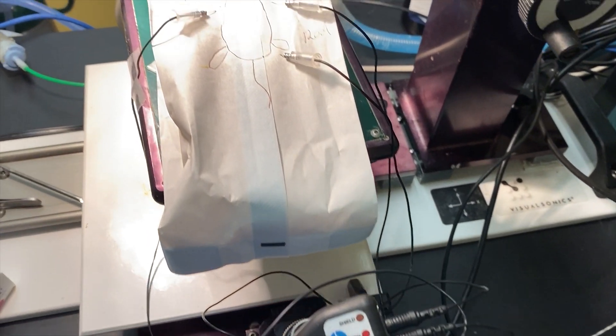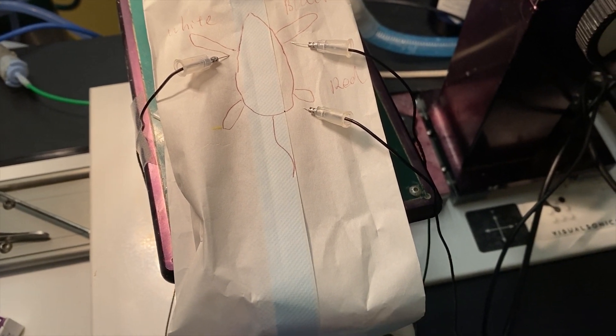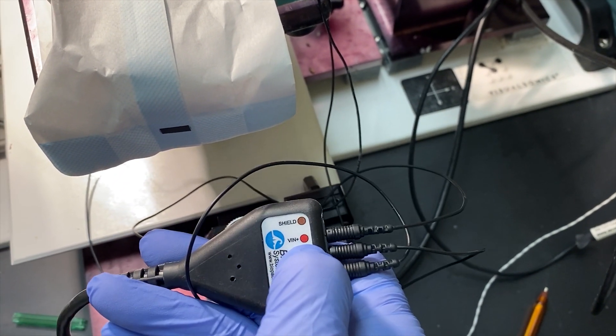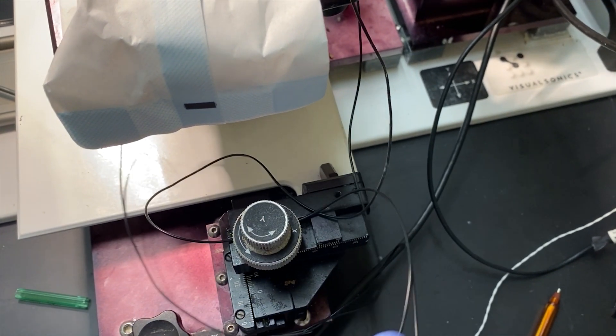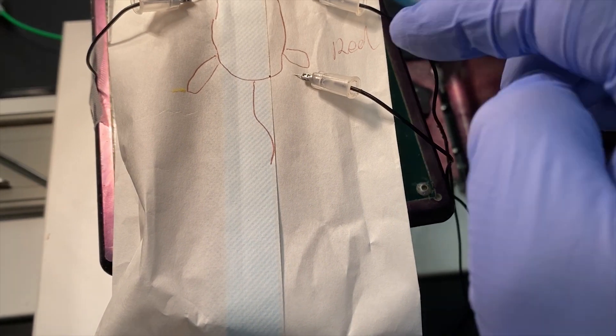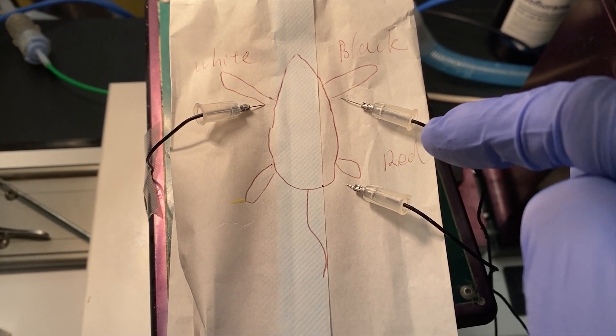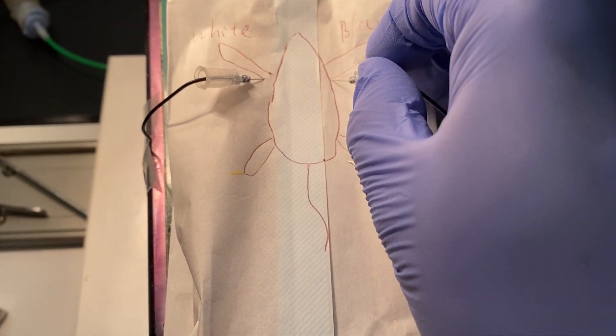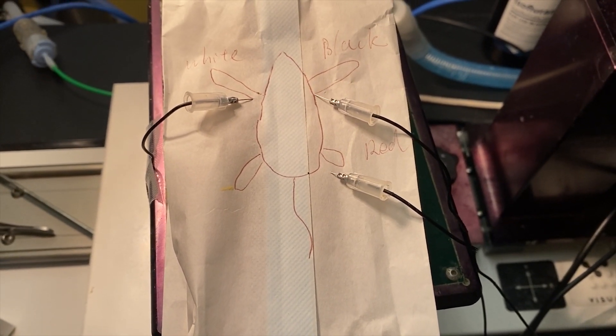So when you put the mouse on the pad you will follow the direction. For example, the right nail is this line. It's here, right, in the mouse left line. So when you put all the nails inside the mouse body, you can begin recording.